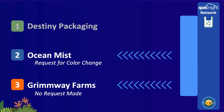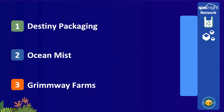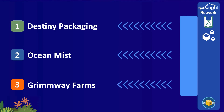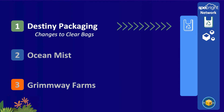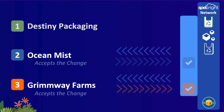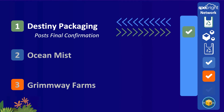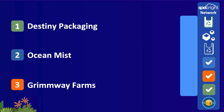Grimway likes the new formulation. Ocean Mist likes the bag but hopes it could be transparent, so they share their request in a comment. As they save the comment, it is now visible on the blockchain to everyone — everyone gets an event. Now the specification owner at Destiny can take the appropriate action, then accept and save the change, which is visible on the blockchain, generating a new platform event. The conversation happens with all the security and transparency required by these companies, and when they all reach an agreement, it's immutably stored on the blockchain.